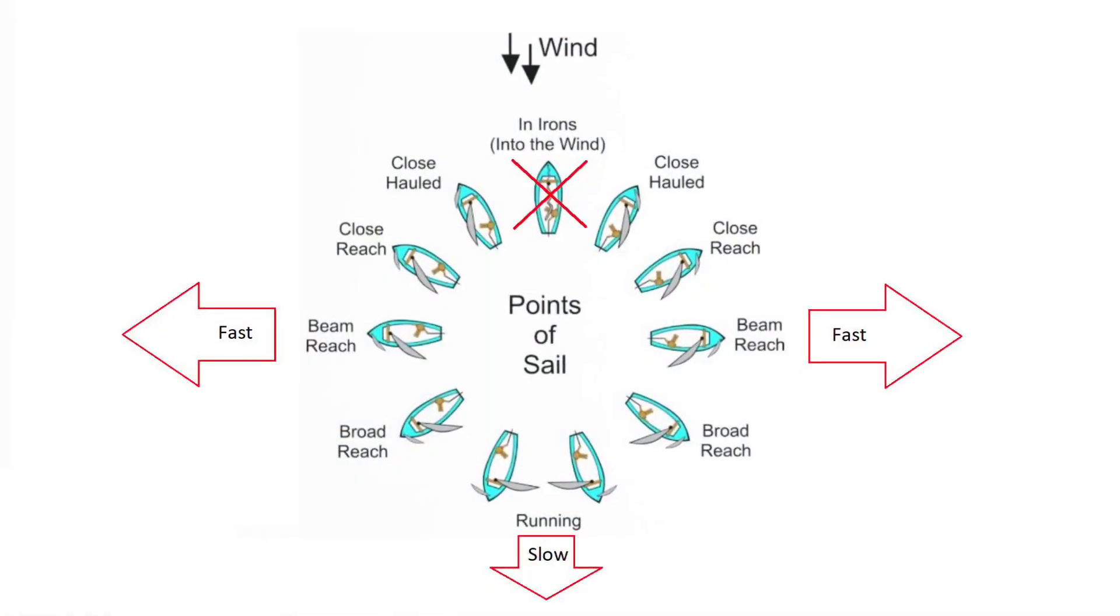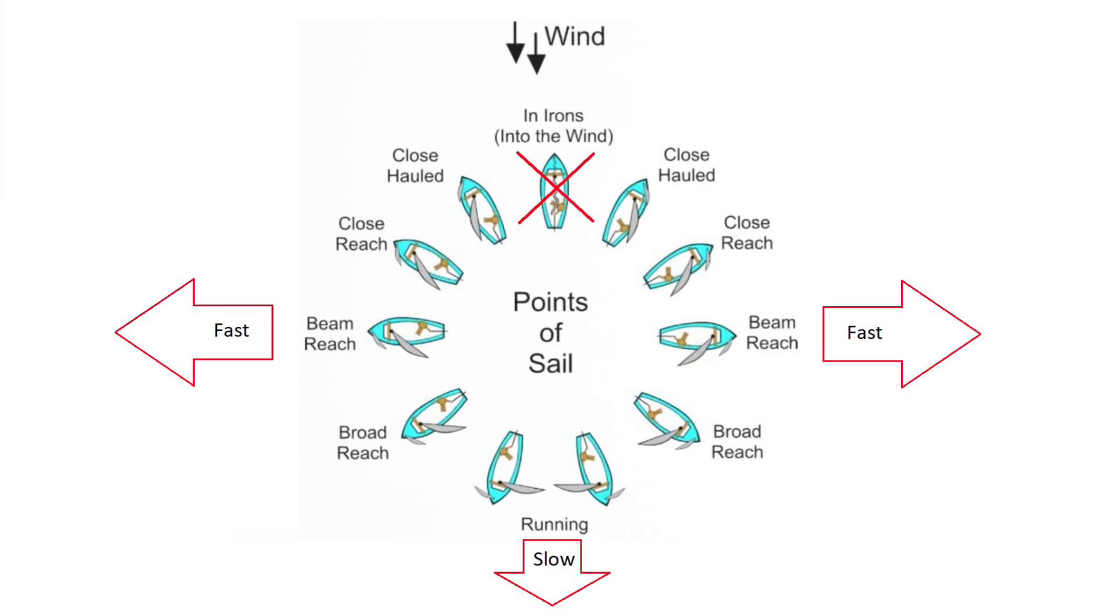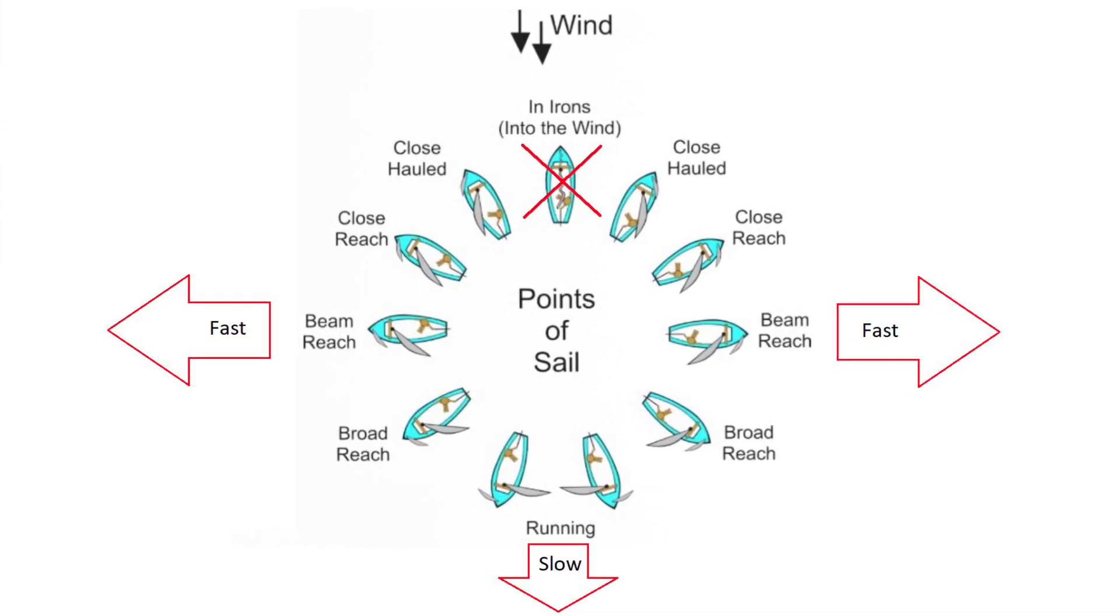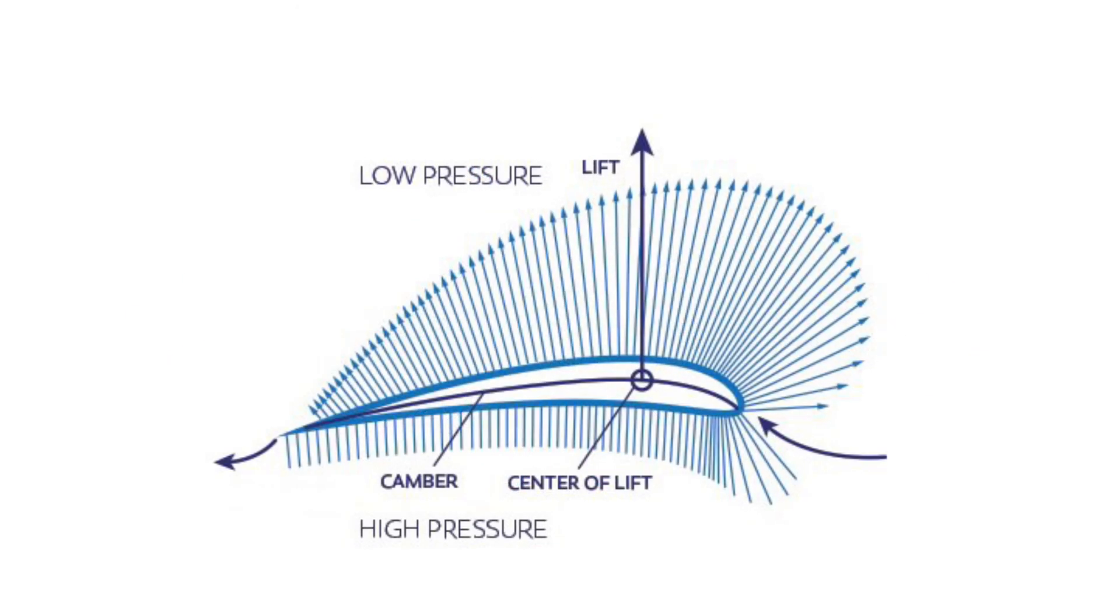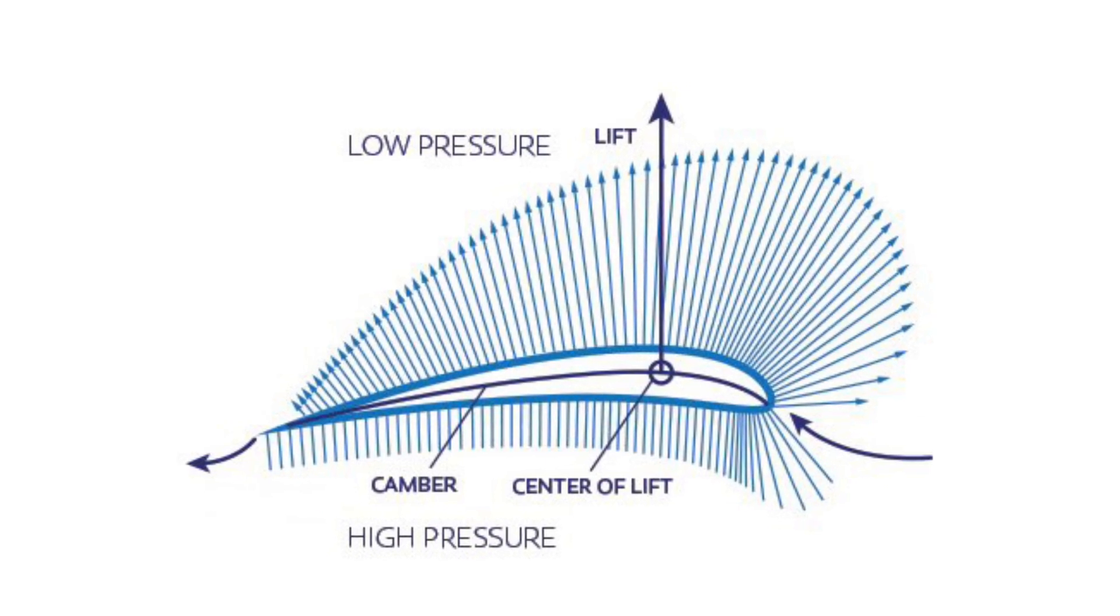Unlike old square-rigged ships, modern sailboats can sail in almost any direction relative to the wind, except straight upwind. But for most boats, the fastest points of sail are reaches when you're sailing across the wind. This is because modern sails act like wings which produce lift and not parachutes that produce only drag.